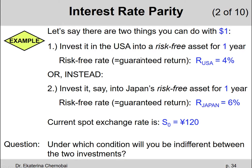For option two, you invest your $1 overseas into Japan's risk-free short-term government bond for one year. The risk-free rate there is 6%, so R_Japan = 6%. One more thing: the current spot exchange rate is S0 = 120 Yen per one US dollar.